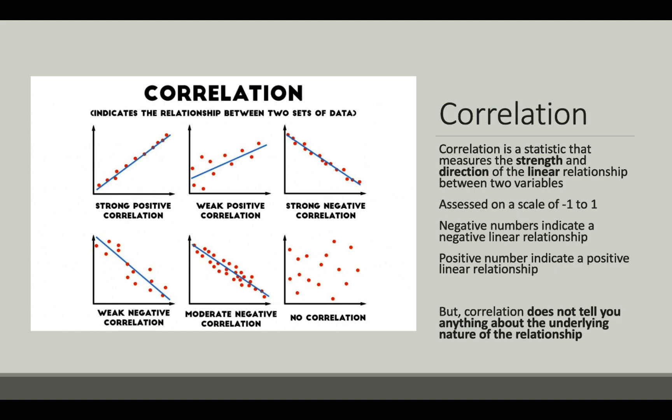Correlation is a statistic that measures the strength and direction of the linear relationship between two variables. It is calculated on a scale of negative one to one by the variable r, where negative numbers indicate a negative linear relationship — as one variable falls, the other variable increases — and positive numbers indicate positive linear relationships, where as one variable increases, the other variable increases. The closer a number is to one, the stronger the linear relationship. For example, the upper right-hand image probably has an r value of about 0.9, indicating a strong positive linear relationship. Numbers closer to zero indicate weaker relationships, and an r value of zero indicates a total lack of linear relationship between two variables.